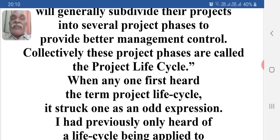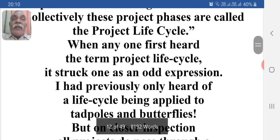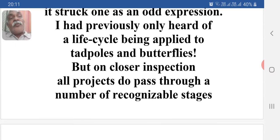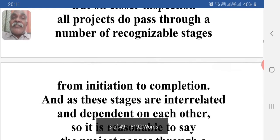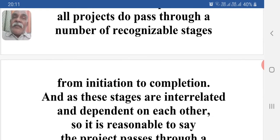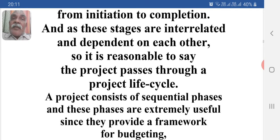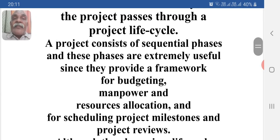When one first hears the term 'project life cycle,' it strikes one as an odd expression — previously only heard applied to tadpoles and butterflies. But on closer inspection, all projects do pass through a number of recognizable stages from initiation to completion. And as these stages are interrelated and dependent on each other, it is reasonable to say the project passes through a project life cycle. A project consists of sequential phases, and these phases are extremely useful since they provide a framework for budgeting, manpower, resource allocation, and for scheduling project milestones and project reviews.